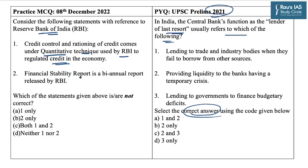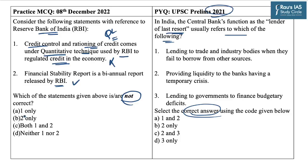Statement 2 says the Financial Stability Report is a bi-annual report released by RBI. In this question, you have to identify the incorrect statements — be very careful whether the question asks for correct or incorrect statements. Statement 1 is incorrect because credit control and rationing of credit is a qualitative technique, not a quantitative technique. Statement 2 is correct as the Financial Stability Report is released twice a year by RBI. Since we need incorrect statements, the answer is A — 1 only. The answer to the previous year question is B — 2 only.